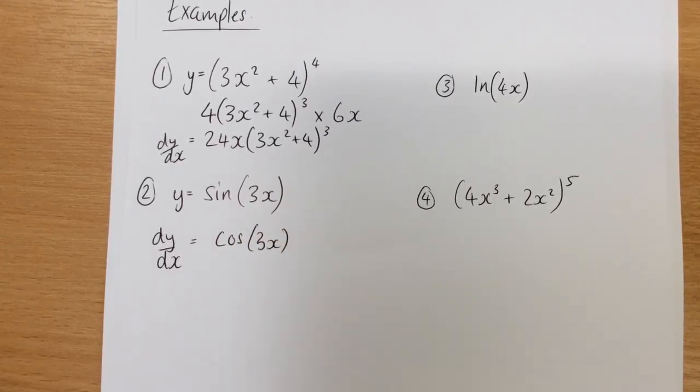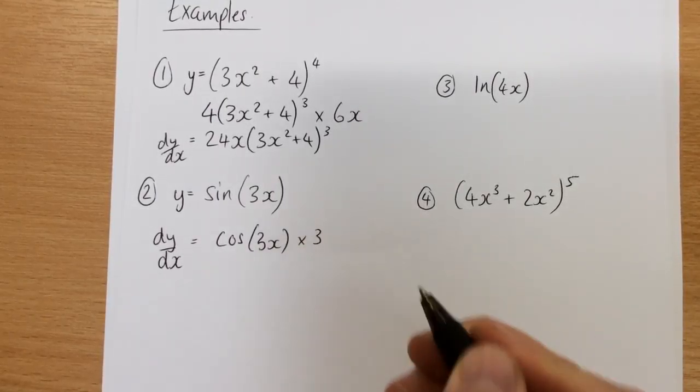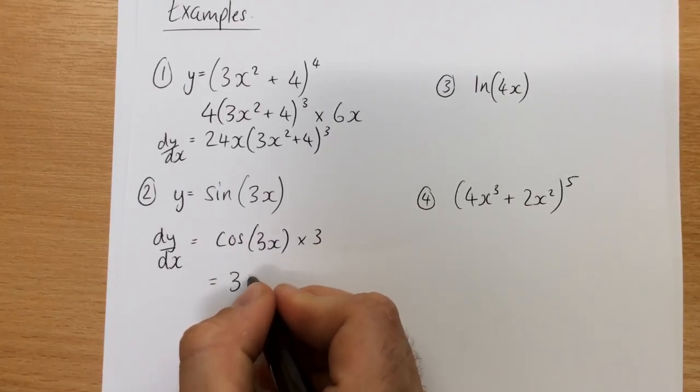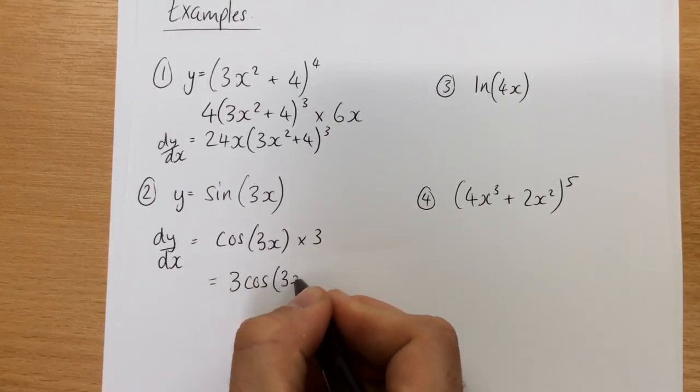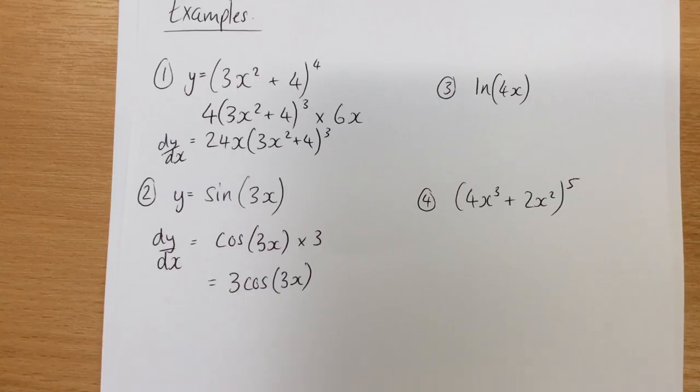And what am I going to have to times it by? What's the differential of 3x? If I differentiate just 3, so I'm going to times this by 3, so then just to tidy that up, I can write 3 cos 3x, and it is as simple as that.